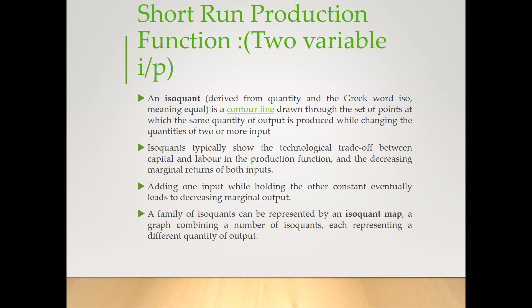Isoquants typically show the technological trade-off between capital and labor in the production function and the decreasing marginal returns of both inputs. Adding one input while holding the other constant eventually leads to decreasing marginal output. A family of isoquants can be represented by an isoquant map — when more than one isoquant curve is present, we call it an isoquant map.